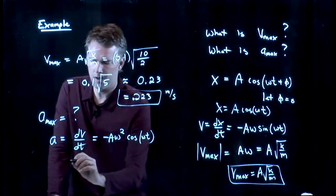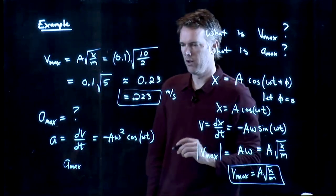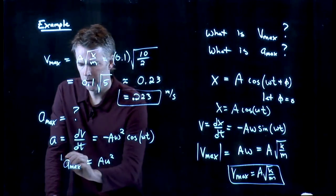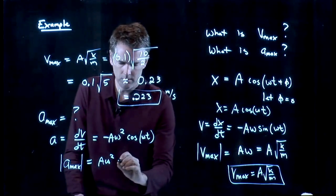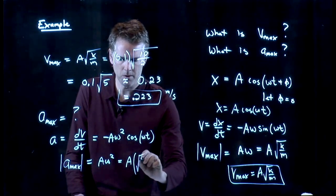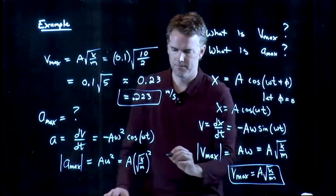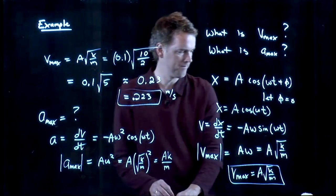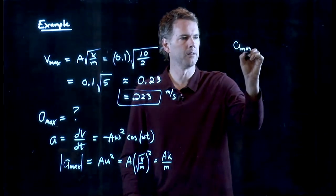And now, again, cosine can only go up to 1 and down to negative 1. So the maximum acceleration is just going to be A omega squared. Just worry about the magnitude of it, not the sine. And now, look what happens. Omega is the square root of K over M, but we're going to square it. And so we get AK over M. And now we can plug in some of those numbers and calculate A max.